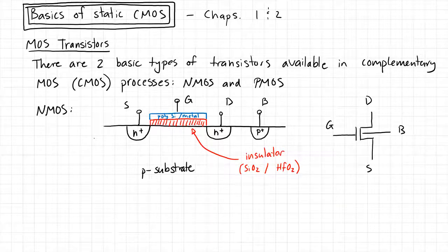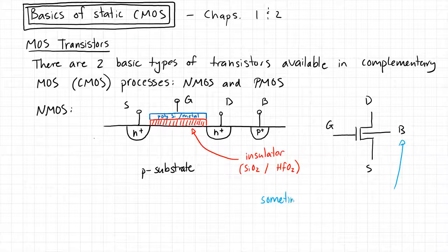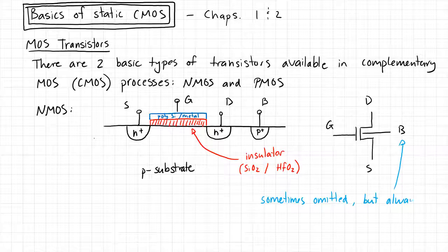We also have to be sure to add the bulk terminal — it's a very important terminal. It is sometimes omitted, but in a bulk process it's always there. If it's omitted, we'll introduce rules of thumb that say we pretty much know where it's connected. But if it's explicitly shown, then we have to be explicit about where we actually connect it.